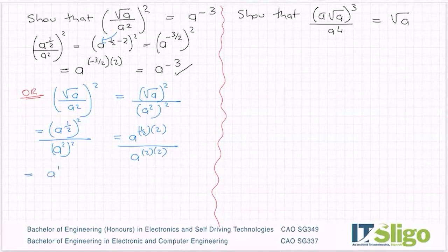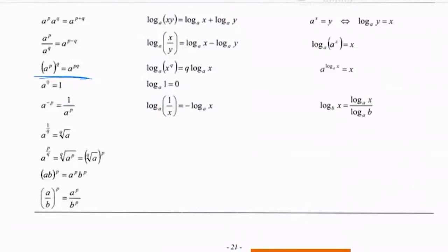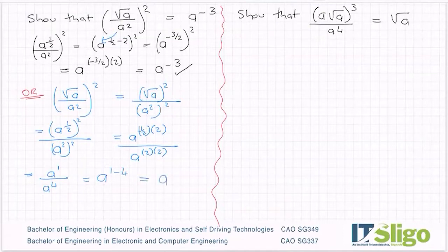Then you multiply: a half by two is one, and on the bottom, two twos are four. Then it's a division, so it's a to the power of one over a to the power of four. A to the power of one over a to the power of four — subtracting powers, top minus the bottom — that will be a to the power of one minus four, and one minus four is minus three. So you'll also get the answer if you do it that way.